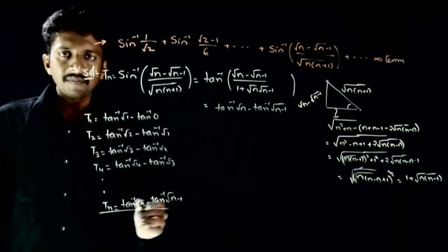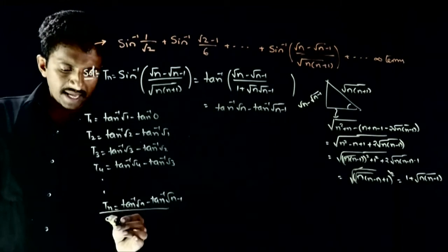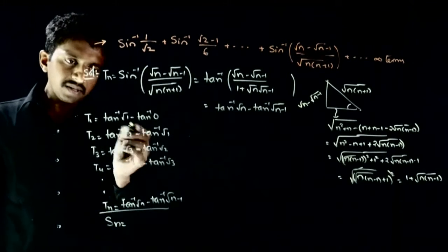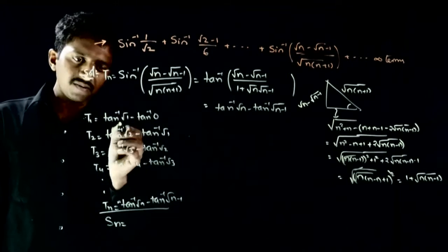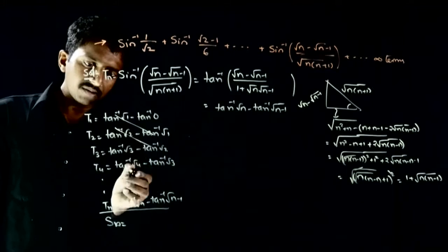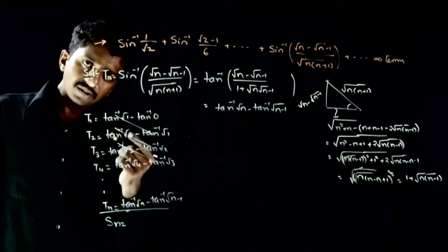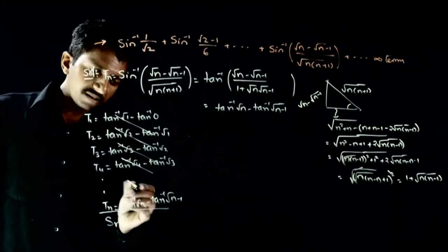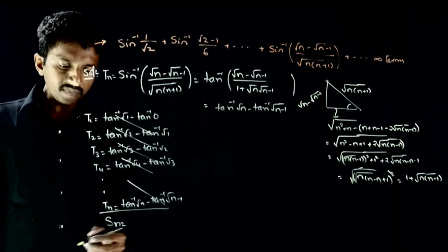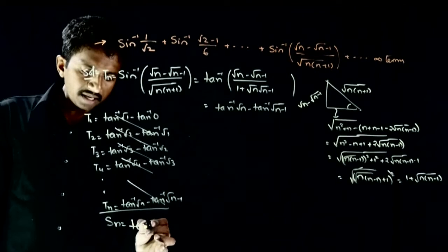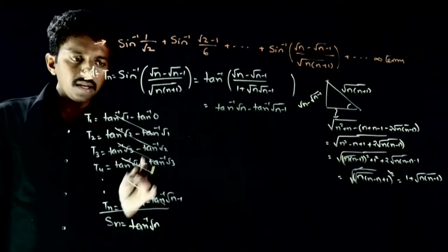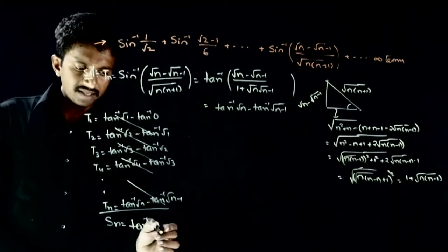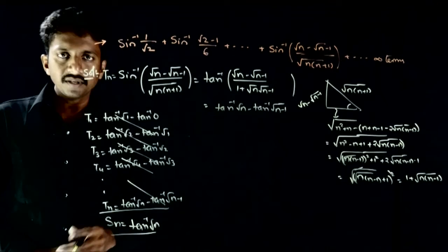Summing these n terms, Sn equals — you can see many terms cancel: tan⁻¹(root 1) cancels with -tan⁻¹(root 1), tan⁻¹(root 2) cancels, and so on. Continuing the pattern, all intermediate terms cancel out, and what remains is tan⁻¹(root n) minus tan⁻¹(0), which is 0. So Sn = tan⁻¹(root n).